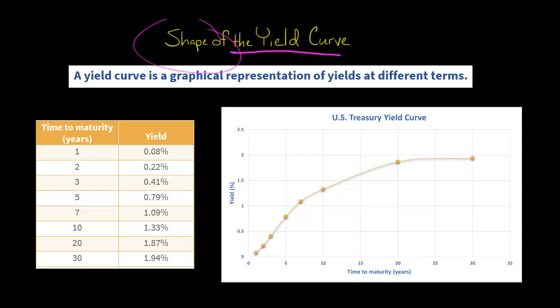The yield curve can take on a variety of shapes, the most common being the upward sloping shape. It's upward sloping because there's higher yields for longer maturities.